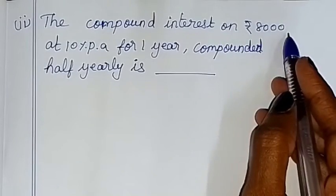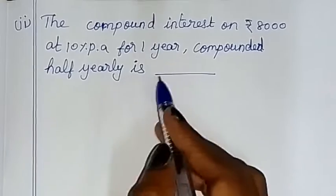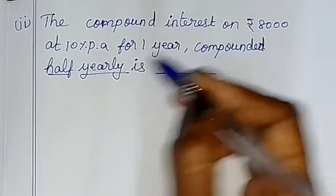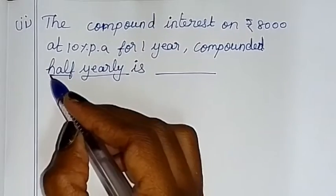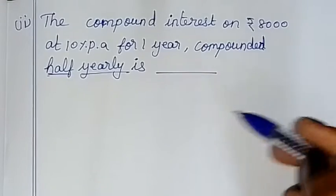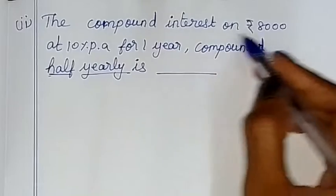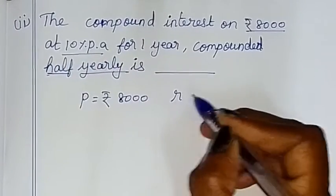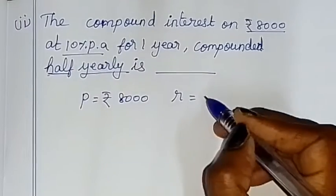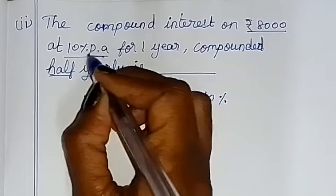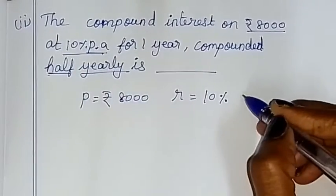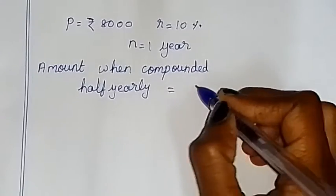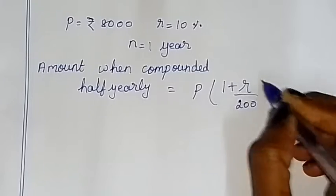The compound interest on Rs.8,000 at 10% per annum for 1 year, compounded half-yearly. Half-yearly means every 6 months. The rate of interest is 10% per annum, and the number of years is 1. The formula for amount when compounded half-yearly is: P into (1 + R by 200) whole power 2N.